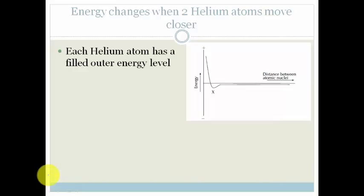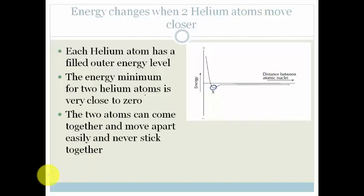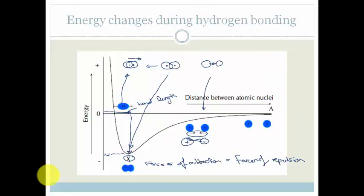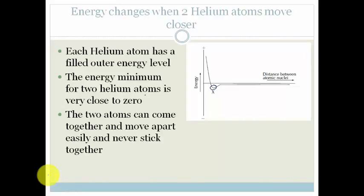Each helium has a full outer energy level, so it really doesn't need anything. It doesn't get attracted, it doesn't do anything. The energy minimum for the two helium atoms is very close to zero — it's so close to zero that it doesn't even bother to come close to it. It allows the atoms to come close together, but they move apart easily and they never stick together. Look how big the hydrogen dip is compared to that little gap for helium — the amount of energy helium would gain by being close together is just not worth it, so they don't stick together.